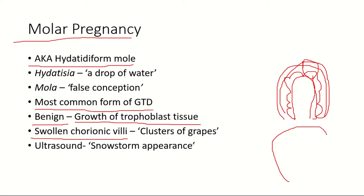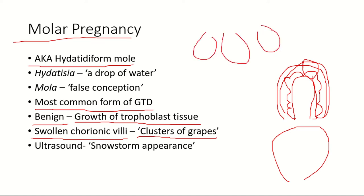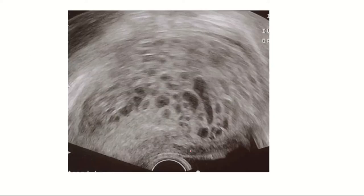In molar pregnancy, the villi become massively swollen. On ultrasonography, these swollen villi give the appearance of a cluster of grapes. The water content of the villi creates a black-and-white discrepancy on ultrasound described as a snowstorm appearance, which is a classical sign of molar pregnancy. You can see the fluid-filled dilated chorionic villi as dark spaces with grape-like structures on the ultrasound.